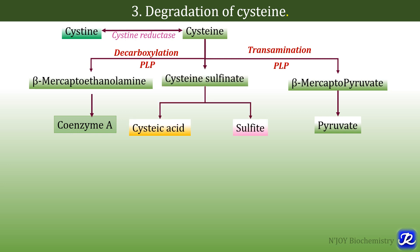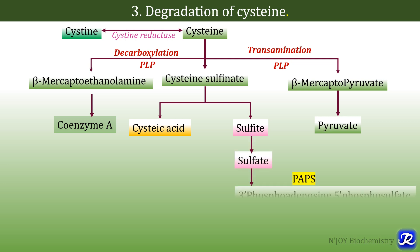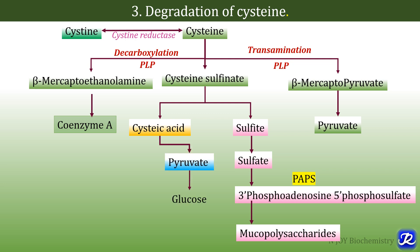Another fate is formation of cysteine sulphinate, which can be converted to cysteic acid and sulfite. Sulfite is useful in the formation of the active sulfur donor PAPS, which is responsible for sulfation of mucopolysaccharides. From cysteic acid, pyruvate is derived and taurine is formed, ultimately yielding taurocholate, a conjugating agent involved in the formation of bile acids.